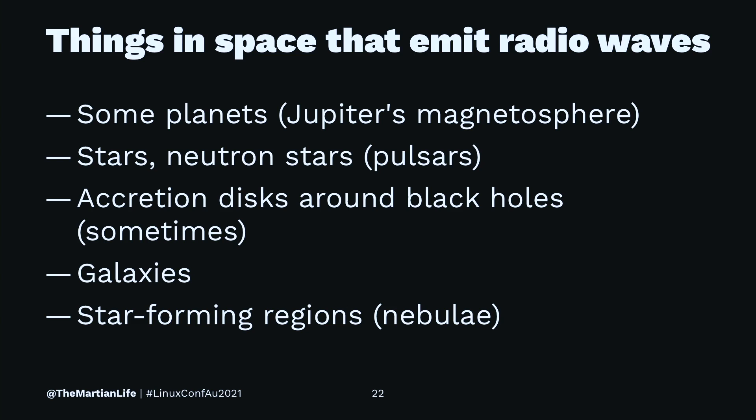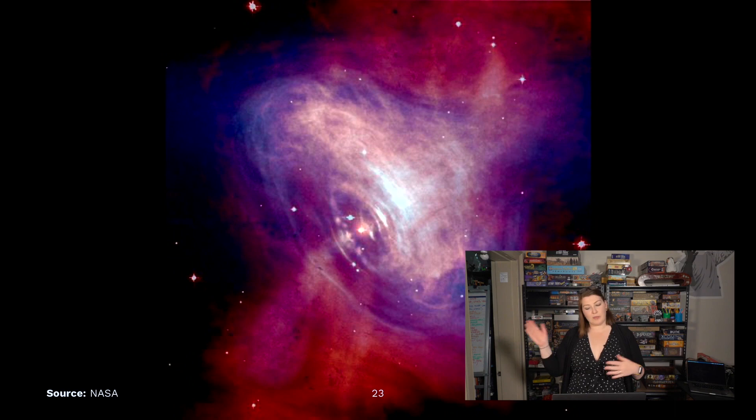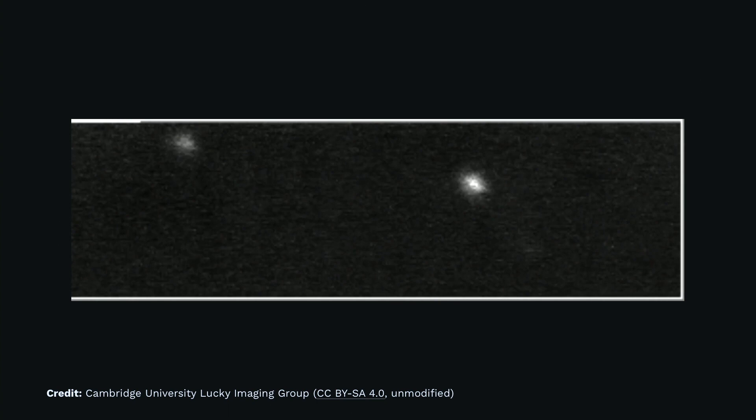Galaxies themselves — because they contain many of these objects — and star-forming regions like nebulae when becoming star nurseries also emit in radio. A great example is the Crab Nebula — the first pulsar ever seen — shown here as a stacked image using optical data from Hubble in red and X-ray images from Chandra in blue. The Crab Nebula contains the Crab Pulsar, the first pulsar ever observed, and as you can see, it flashes on about a two-beat pattern. Studying the rate and intensity at which pulsars flash tells us about their properties, how they were made, and how old they are.